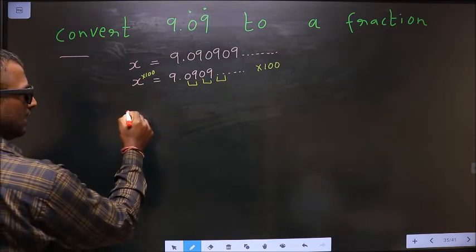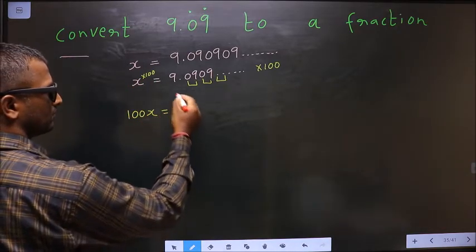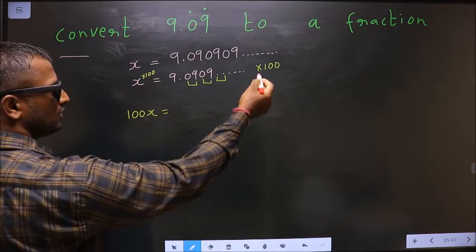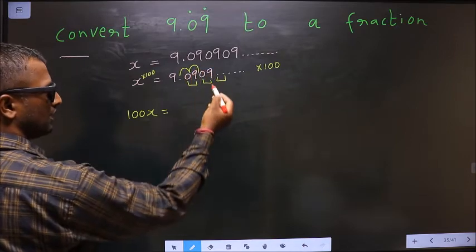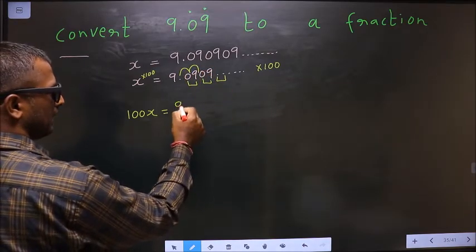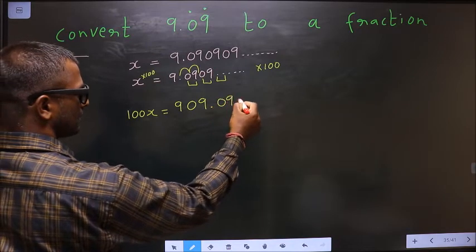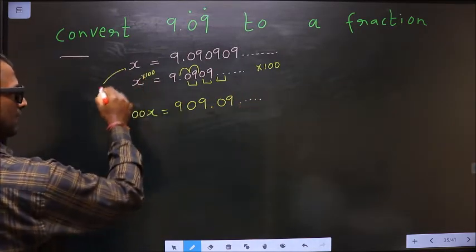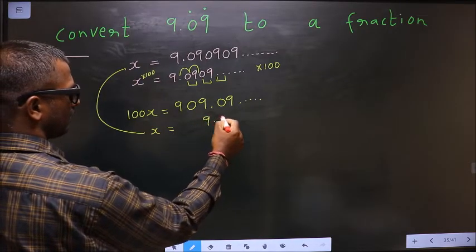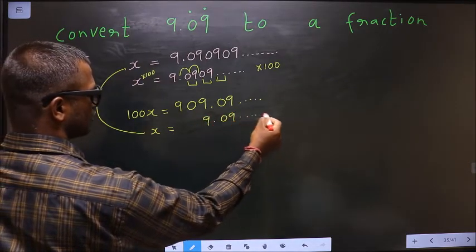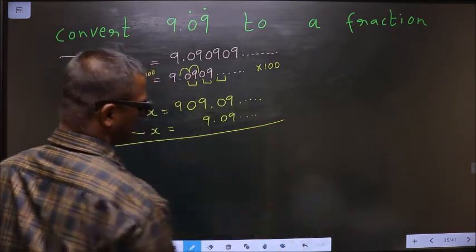X into 100 is 100X. Equal to, when I multiply this into 100, the decimal will shift 2 places to the right, making it 909.0909 and so on. Now I write this here: X equals 9.0909 and so on.